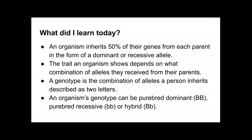So what did we learn today? An organism inherits 50% of their genes from each parent in the form of a dominant or recessive allele. The trait an organism shows depends on what combination of alleles they receive from their parents. A genotype is the combination of alleles a person inherits, described as two letters. An organism's genotype can be purebred dominant, purebred recessive, or hybrid.